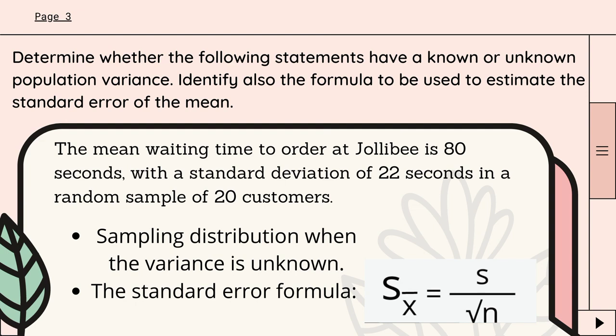Example number one. The mean waiting time to order at Jollibee is 80 seconds, with a standard deviation of 22 seconds in a random sample of 20 customers. The sampling distribution when the variance is unknown. The standard error formula is S divided by the square root of n.